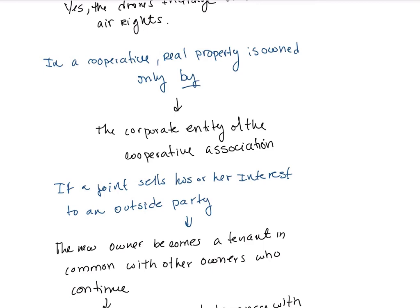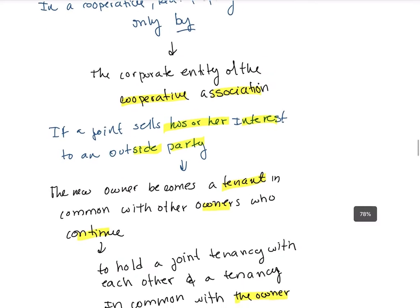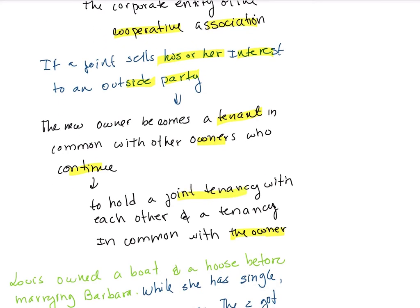In a cooperative, the property is owned only by the cooperative entity or the cooperative association. If a joint tenant conveys their interest to an outside party, the new owner becomes a tenant in common with the remaining owners, who continue to hold a joint tenancy with each other and a tenancy in common with the new owner.